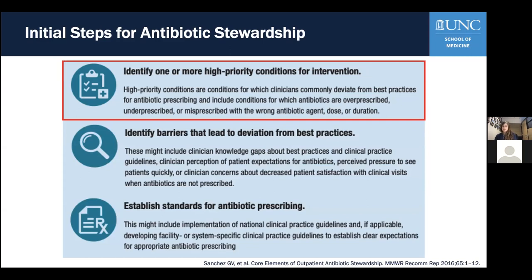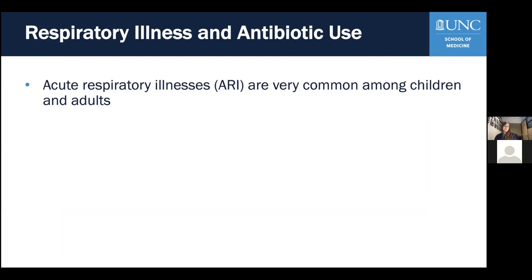One high-priority condition is acute respiratory illness. What is encompassed by ARI varies by context; for today's discussion I'll use it broadly to incorporate both upper and lower respiratory disease, which includes bronchitis, bronchiolitis, upper respiratory tract infections, sinusitis, and viral pharyngitis — basically all acute respiratory illnesses that are usually less than a week of symptoms when evaluated.